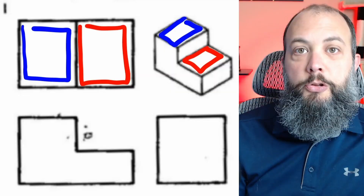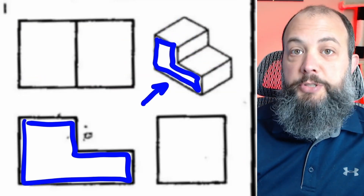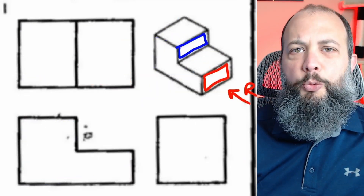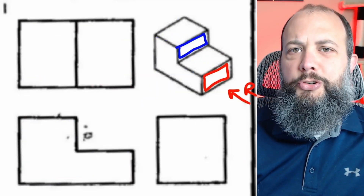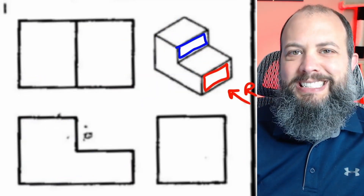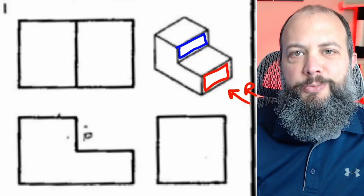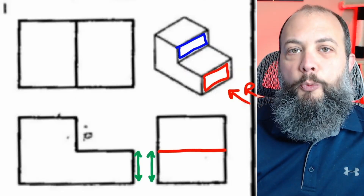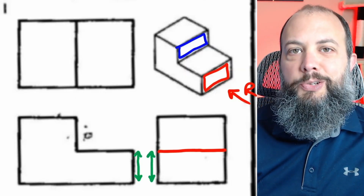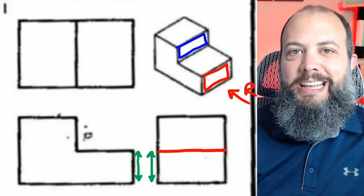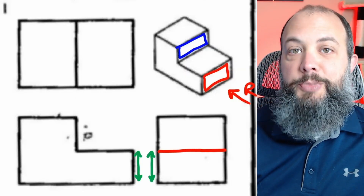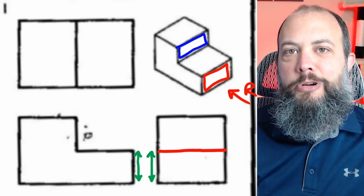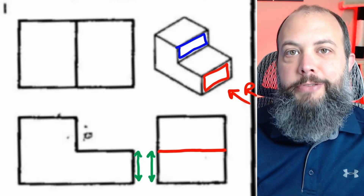For this one, the top view looks correct and the front view looks correct, but when viewing from the right there should be two distinct boxes visible. To finish this drawing, we need to draw one horizontal line across the right-hand view, and it's going to be drawn at the same height as that horizontal line on the front view.